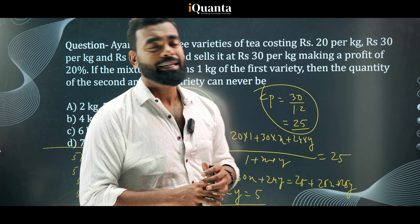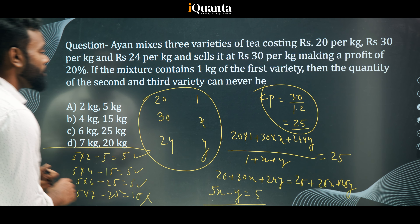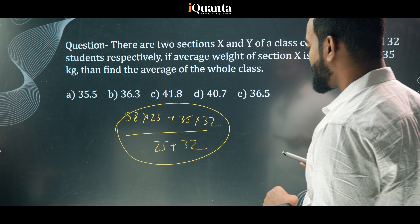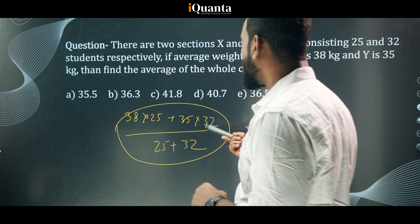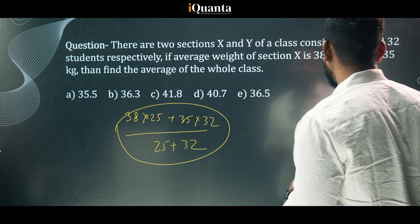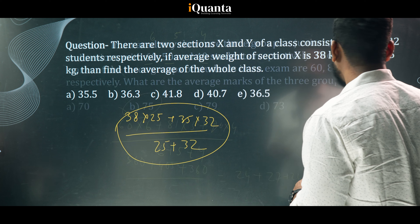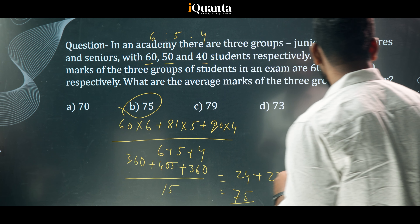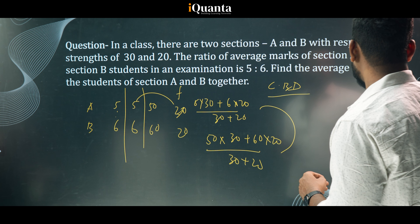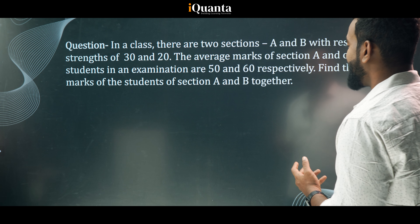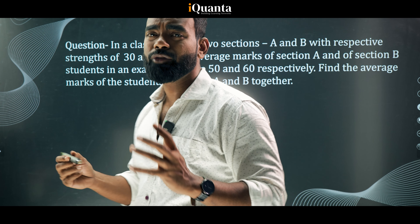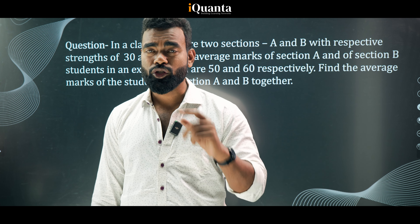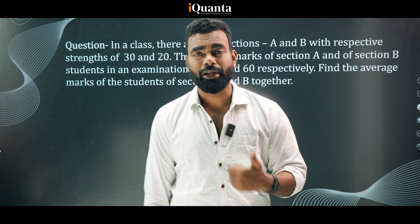To recap: some questions are calculation-heavy so you need to calculate faster. In the academy question with three terms, we used the ratio to simplify. In some cases the answer cannot be determined because only the ratio of marks was given, not the actual values. In the next class we will start with mixture and alligation. Keep working and keep solving!